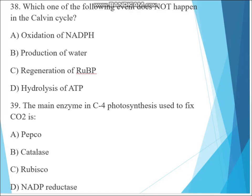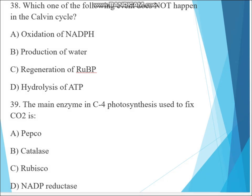Question 38. Which of the following events does not happen in the Calvin cycle? Question 39. The main enzyme in C4 photosynthesis used to fix carbon dioxide is NADP reductase. The answer must be PEP carboxylase. PEP carboxylase fixes carbon dioxide in C4 plants.